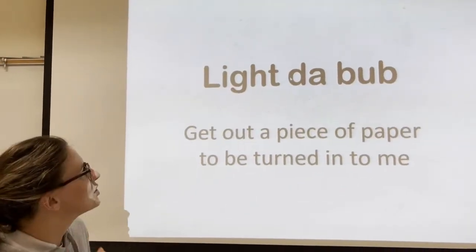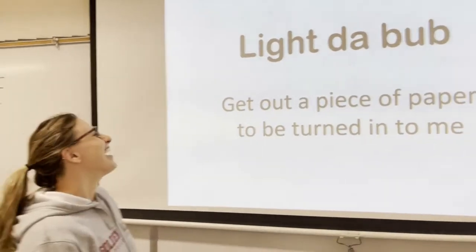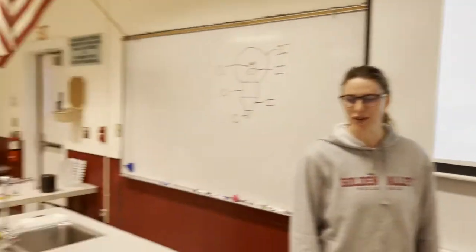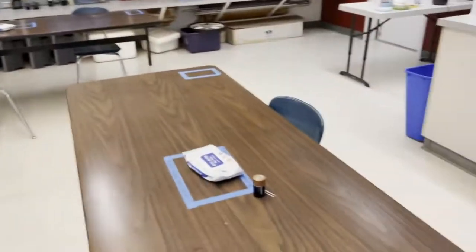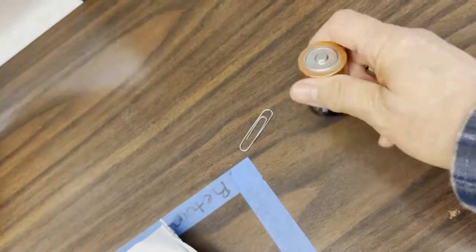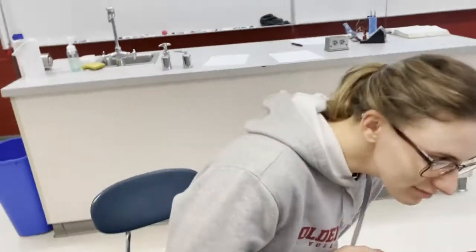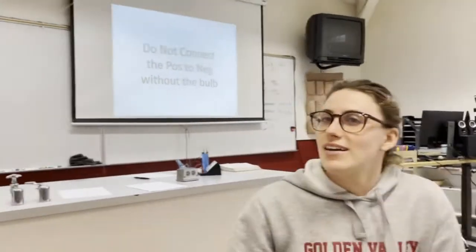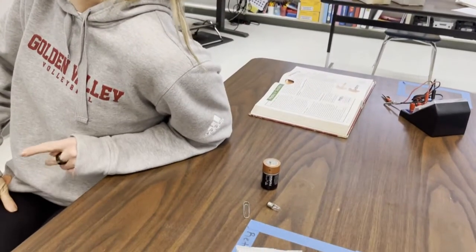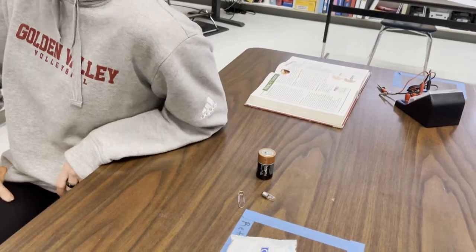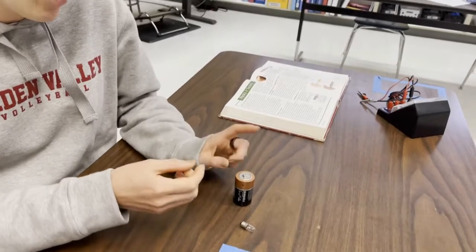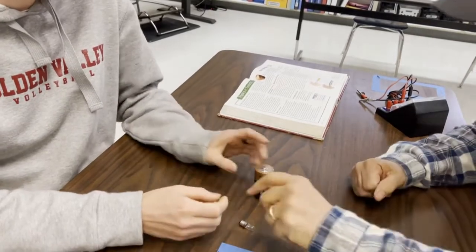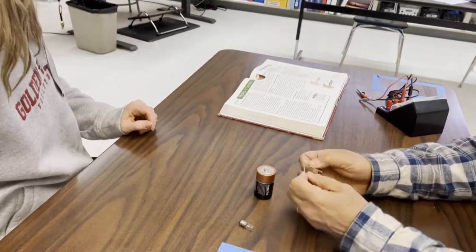Now we're going to light the bulb. We're going to get out a piece of paper to be turned in. We'll try different arrangements of the battery, the bulb, and the paper clip and see if we can light the bulb. Note to self: do not connect positive to negative directly — don't connect one end of the paper clip to the positive and the other to the negative without the bulb.